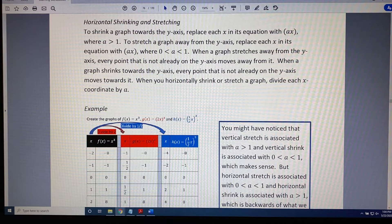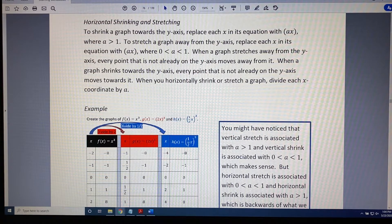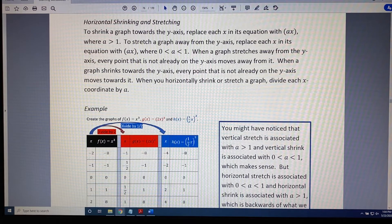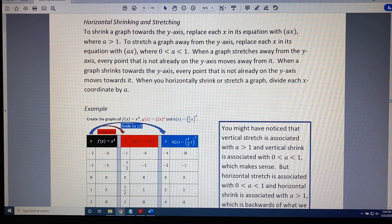When a graph stretches away from the y-axis, every point not already on the y-axis moves away from it. When a graph shrinks towards the y-axis, every point not already on the y-axis moves towards it. When you horizontally shrink or stretch a graph, you divide each x-coordinate by a.